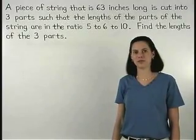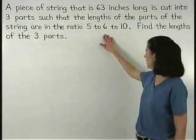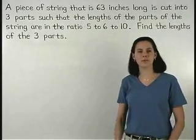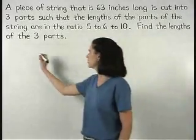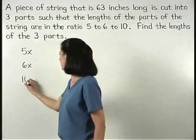Since the three parts of the string are in the ratio 5 to 6 to 10, we can represent the parts as 5x, 6x, and 10x.